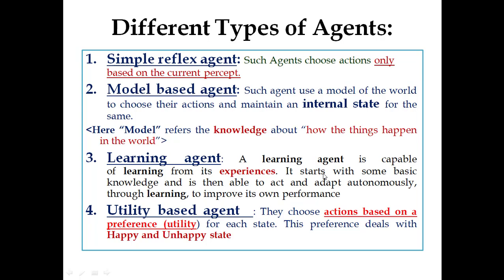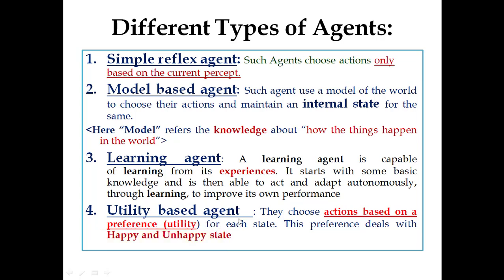Then the utility based agent. What does this preference deal with? This preference deals with happy and unhappy state. So the utility based agent works on the basis of preference, and this preference is to maintain happy and unhappy states.